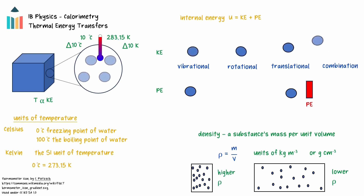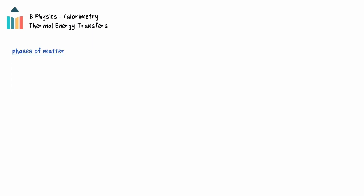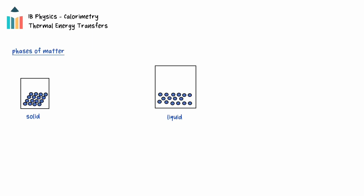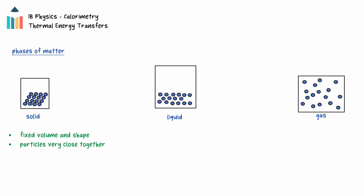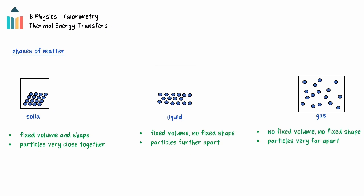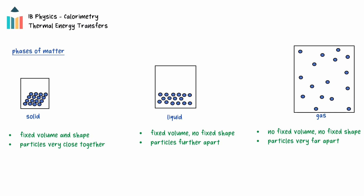The volumes of solids and liquids change little during heating, and so they are considered to have constant densities. There are three phases of matter: solid, liquid, and gas. The phase of matter is determined by the freedom of movement of the particles of the substance. In a solid, the particles are close together and movement is restricted to vibration. Solids have a fixed volume and shape. In a liquid, the particles are a little further apart, allowing some translational movement, but the intermolecular forces are still strong enough to keep the particles together. Liquids have a fixed volume but not a fixed shape. In a gas, the particles are far enough apart that the intermolecular forces are very low. Gases have no fixed volume and no fixed shape; gases will expand to the volume that they are in.